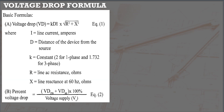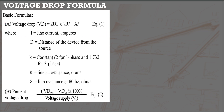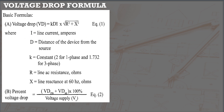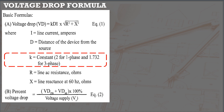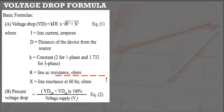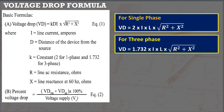This voltage drop formula was taken from Appendix D, wiring design examples, D15 — Voltage Drop Calculation. Where I is the line current in amperes, D is the distance of the device from the source in meters, K is constant (2 for single phase, 1.732 for three phase), R is the line AC resistance in ohms per 305 meters, and X is the line reactance at 60 Hz in ohms. These are the voltage drop formulas for single phase and three phase.